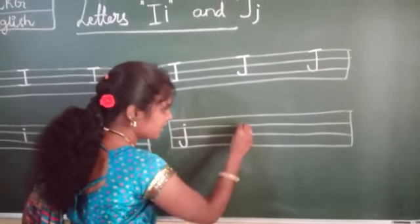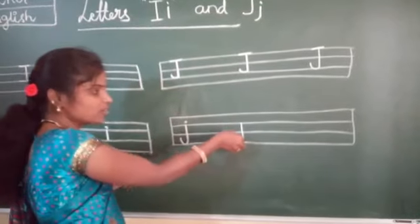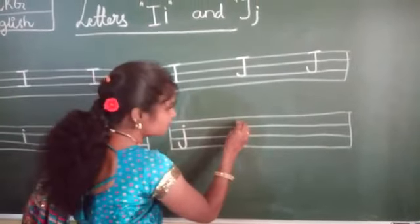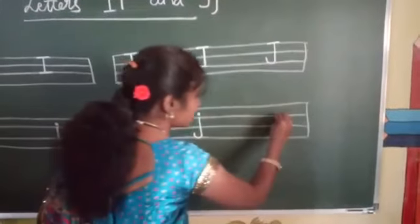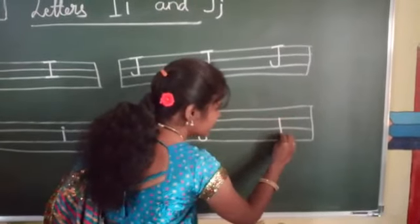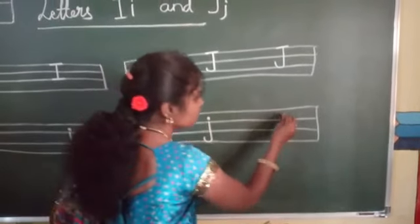Small J. This crosses three lines. Second line starts, goes down, then sleeping line at the bottom. On the other line, standing line, on top I put one small dot. Small J.